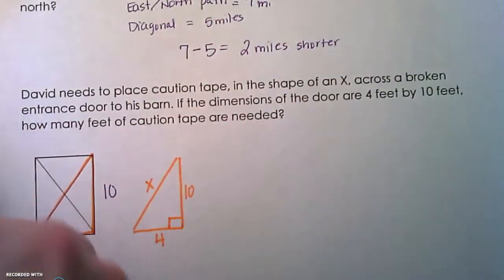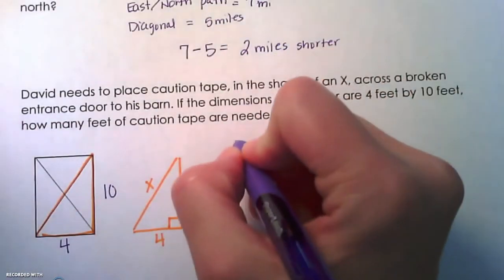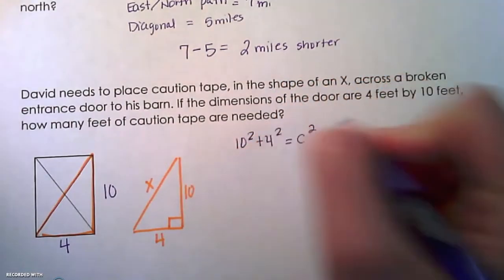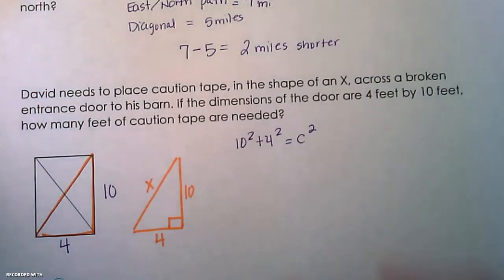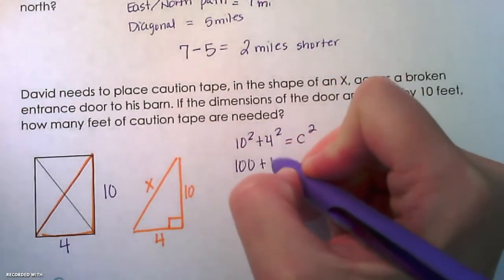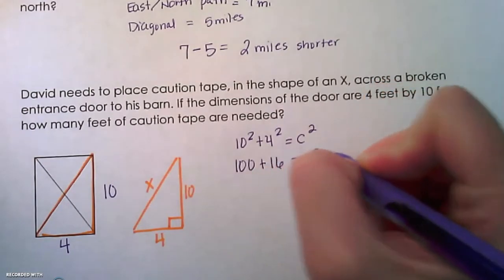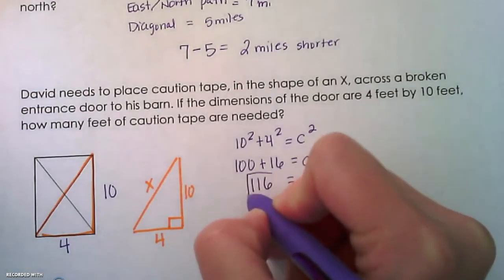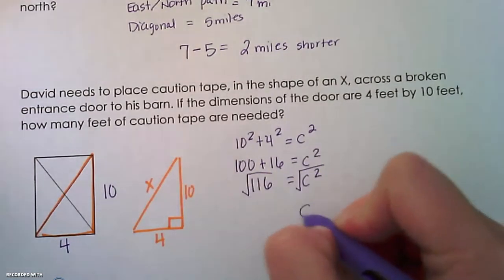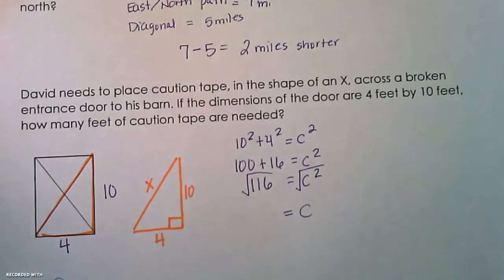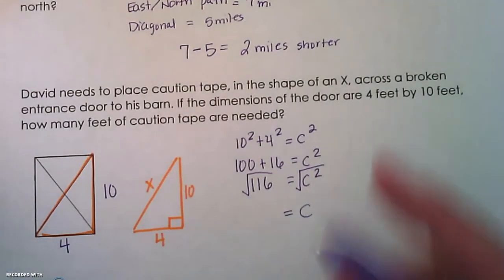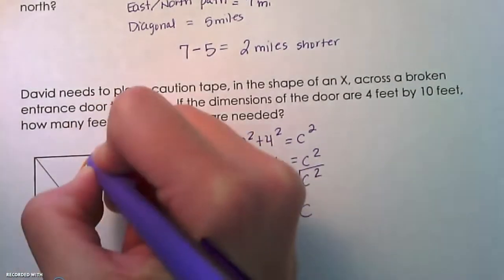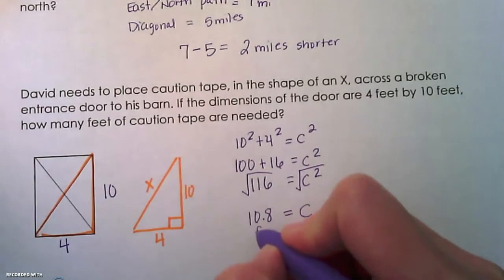We're going to set up Pythagorean theorem to solve for x. We do ten squared plus four squared equals c squared, solving for the hypotenuse. Ten squared is 100 plus four squared is 16 — we add those together to get 116 equals c squared. Taking the square root of both sides, the length of that diagonal is approximately 10.8 feet. So one piece of caution tape is 10.8 feet.